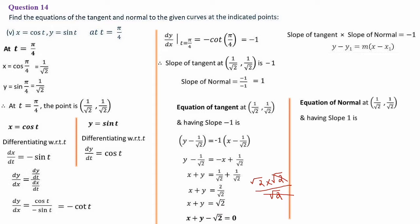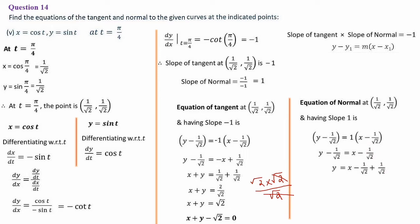Next, equation of the normal at the same point (1/√2, 1/√2) but with slope of normal = 1. Using y − y₁ = m(x − x₁): y − 1/√2 = 1·(x − 1/√2). So y − 1/√2 = x − 1/√2. The constants cancel: y = x. So the equation of the normal is y = x.